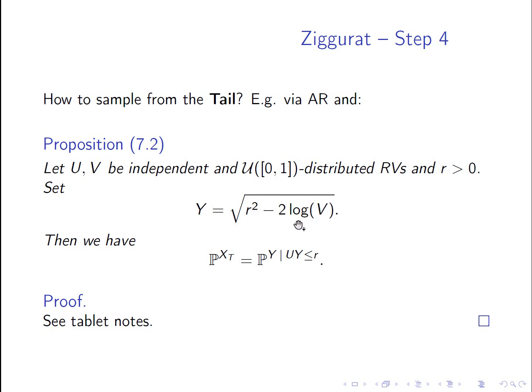And we are testing this proposal by the condition u times y less or equal than r. So if this condition is fulfilled, then we accept and otherwise reject. Or to state this here as the equality of distributions, the target distribution P equals the conditional distribution of y under the condition u times y less or equal than r. So that's again an accept-rejection sampling procedure. And the proof is done in the tablet notes.